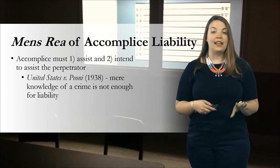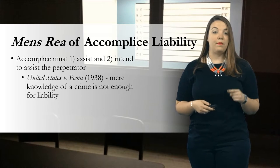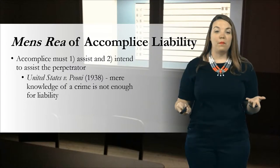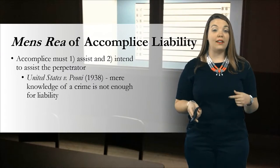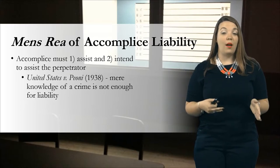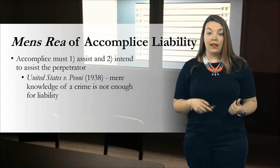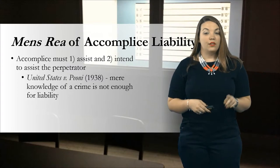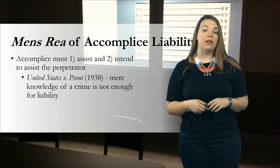I keep discussing the importance of knowledge and intent in order for liability to kick in, and it's because it never used to be this way. In the case of United States v. Peony, a case from 1938, Mr. Peony was being prosecuted for mere knowledge but no intent of the crime. The defendant Peony possessed bills that he did not know were counterfeit. He sold the bills to another man named Regano, who then turned around and sold them to a third man named Dorsey. Mr. Dorsey was then arrested with the bills while trying to pass them out in Brooklyn. At the trial level, Peony was convicted as an accomplice to Dorsey's possession of the counterfeit bills. But if you have no idea that Dorsey was going to go out and try to spend it, are you responsible? Peony argued that yes, he did assist, but he did not intend to assist because he had no knowledge of what was about to happen to the money once he gave the bills to the second guy in the chain.